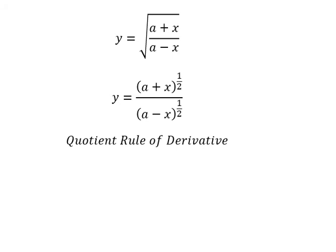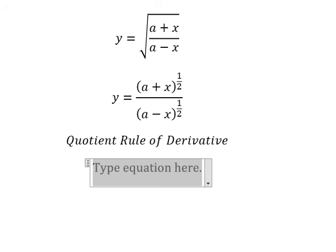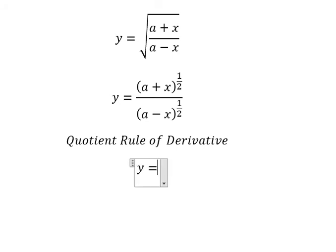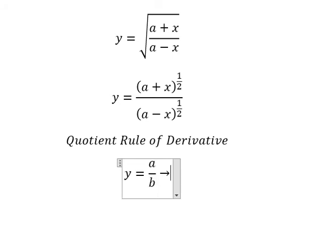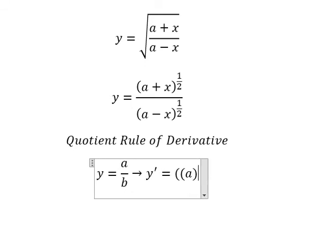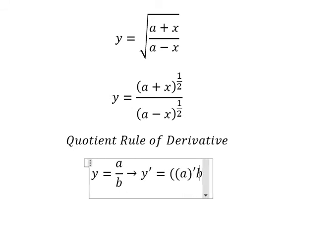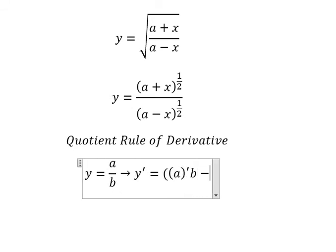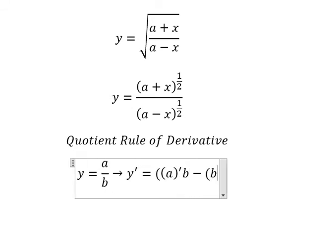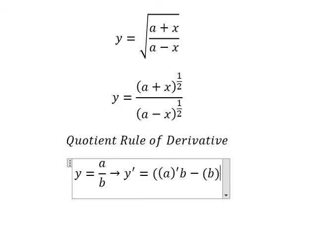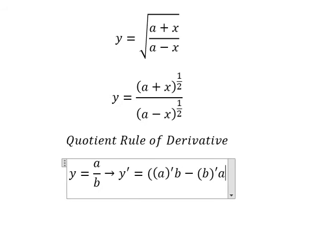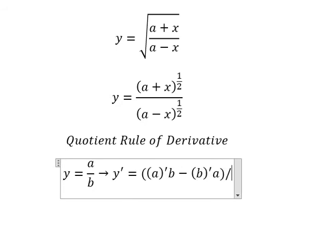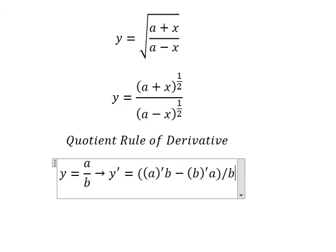So we have y equals to a over b. So if we do the first derivative, we do first derivative of a multiplied by b, minus we do first derivative of b multiplied by a, over b squared.